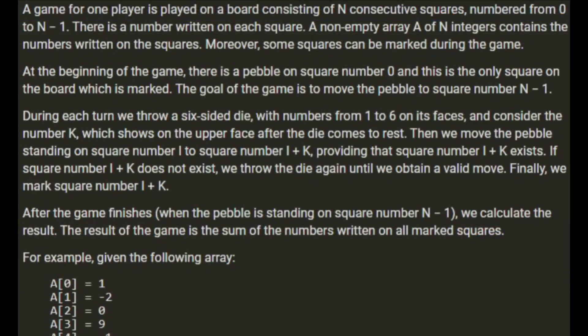A game for one player is played on a board consisting of n consecutive squares numbered from 0 to n-1. There is a number written on each square. A non-empty array of n integers contains the numbers written on the squares. Moreover, some squares can be marked during the game. At the beginning of the game there is a pebble on square number 0, and this is the only square on the board which is marked.